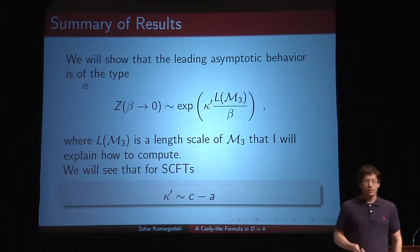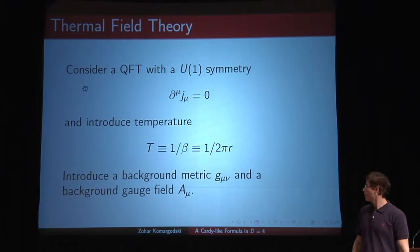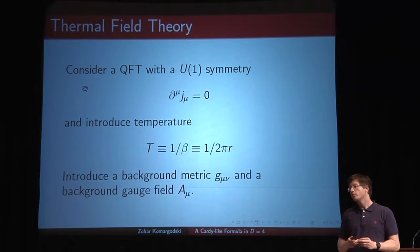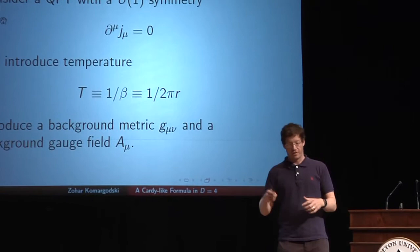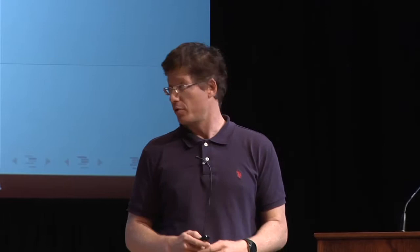Let me start from just general quantum field theory with no supersymmetry, assuming a U(1) symmetry, and study the system at finite temperature T equals one over beta. If we want to compute correlation functions at finite temperature, one convenient way is to couple the system to background fields — a background metric or background gauge field — and then take derivatives with respect to these quantities to generate correlation functions at finite temperature.